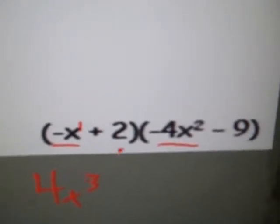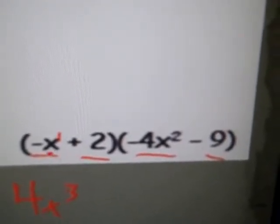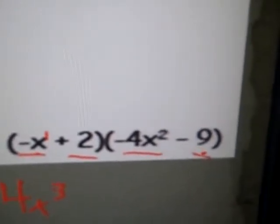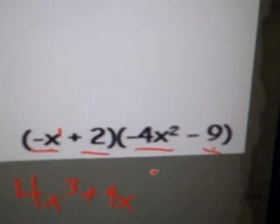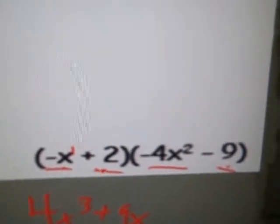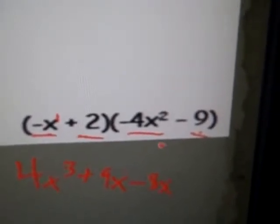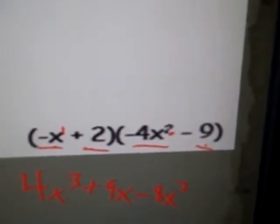And then you do the outer terms. Negative x and negative 9. You get positive 9x. Now the inner terms. 2 and negative 4x. You get negative 8x squared actually. It's negative 8x squared. Because that's an x squared.